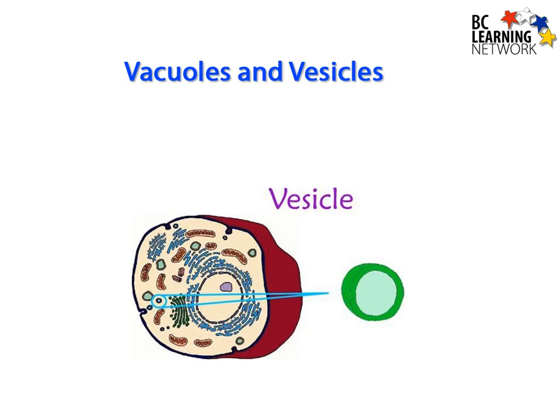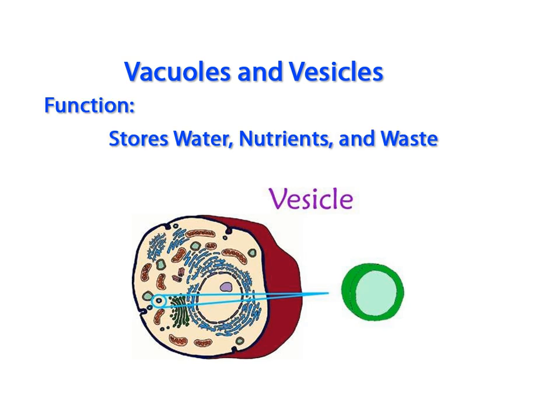Many cellular activities in the body require water or nutrients and produce wastes. The vacuole is an organelle that stores water, nutrients, and waste for the cell. A smaller version of the vacuole is the vesicle, and the function for both of these organelles is the same.